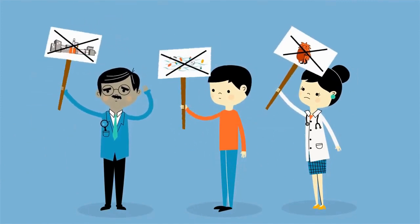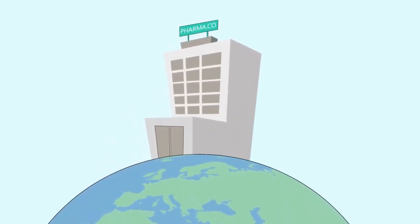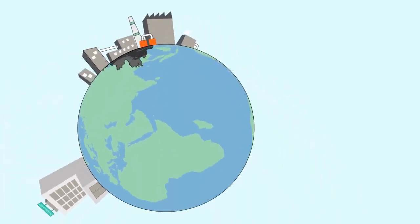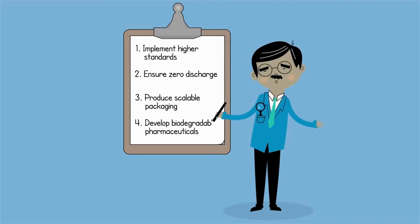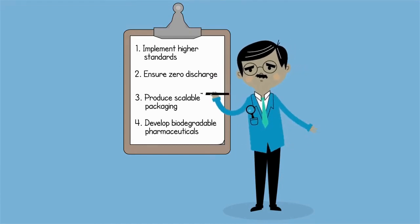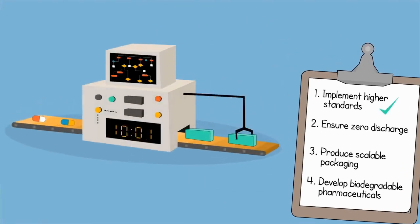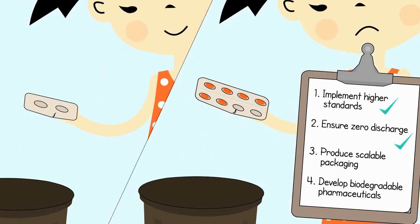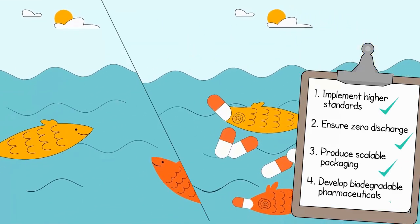Governments must act to protect us and our families from this global threat to public health and the environment. The pharmaceutical industry is responsible for its manufacturing waste released into the environment and subsequent contamination. By producing APIs outside of Europe, many pharmaceutical companies have outsourced the problem. The pharmaceutical industry is uniquely placed to tackle the source of the problem by implementing higher manufacturing standards, ensuring zero discharge from production, producing different size medicine packs, and developing benign pharmaceuticals that rapidly biodegrade into harmless compounds.